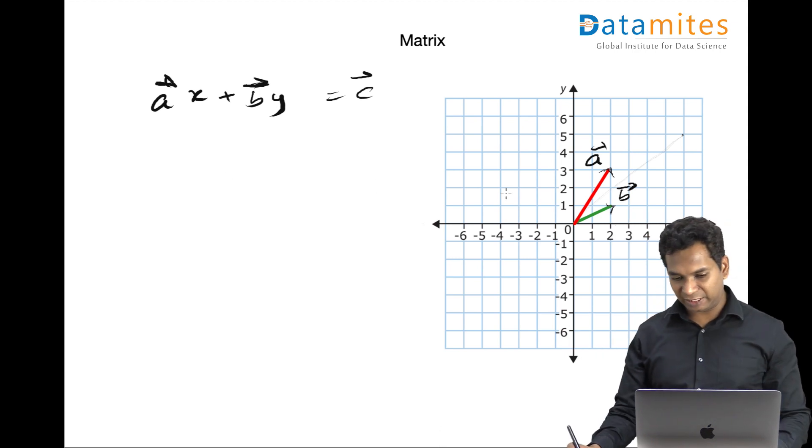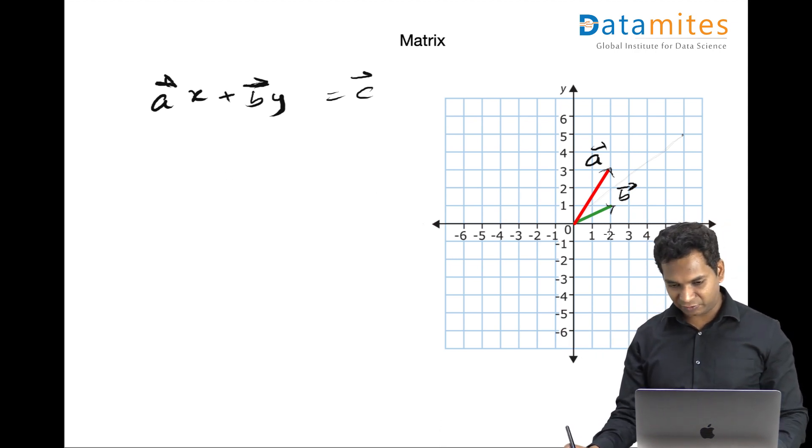For this I can write down the values. So we have the a vector, let me call this as a. This is a and this is b.